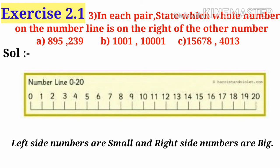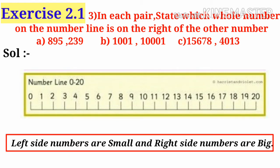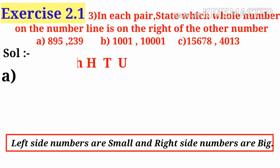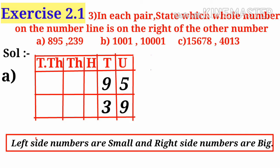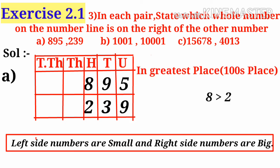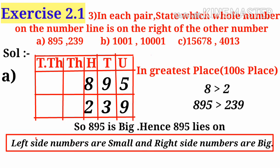Now in the first problem, both numbers have same number of digits, that is 3, so we can compare it only by its place values. In the greatest place value in both the numbers, first number is 8 as digit and second number is 2. We know that 8 is greater than 2.